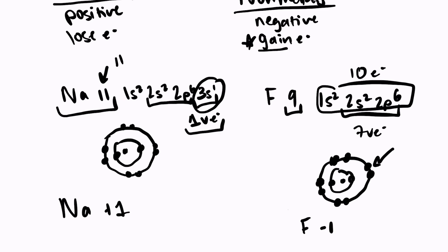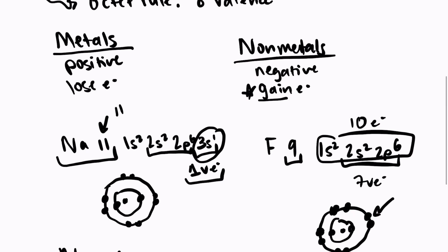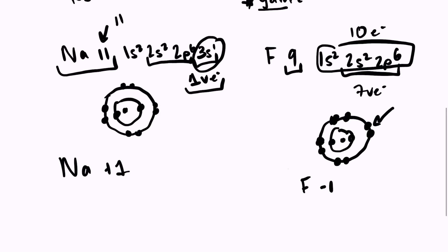So atoms will form ions in order to become stable like the noble gases on the periodic table. All elements want to become stable, and sometimes they have to become ions in order to achieve that. And again, metals will achieve their goal by becoming positive ions. Non-metals will achieve this goal by becoming negative ions. And usually, the metal will actually give its electron to the non-metal.